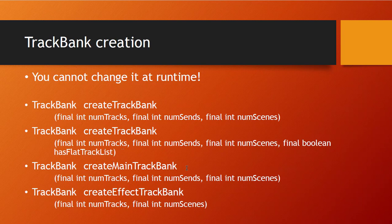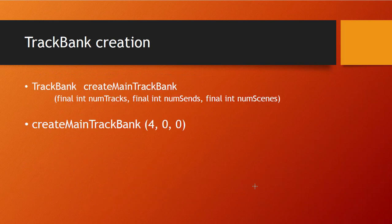For our example we will use the main track bank, which gives us everything — it's the simplest and most straightforward. It has three parameters, similar across all track bank methods. Via the track bank you can also get access to sends and scenes, so you already have to decide at this stage how many sends and scenes you want to control. For our example, we'll leave those at zero since the MOXF doesn't have enough buttons or controls for them.